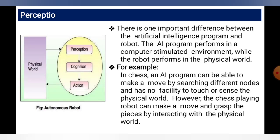Perception involves the physical world cycle: perception, cognition, and action. An important difference between an AI program and a robot is that the AI program performs in a computer-simulated environment while the robot performs in the physical world. For example, in chess, an AI program can make moves by searching different nodes but has no facility to touch or sense the physical world. However, a chess-playing robot can make a move and grab the piece by interacting with the physical world.